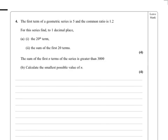OK, the first term is 5, the common ratio is 1.2, so I'm going to write those here. A equals 5, R equals 1.2.